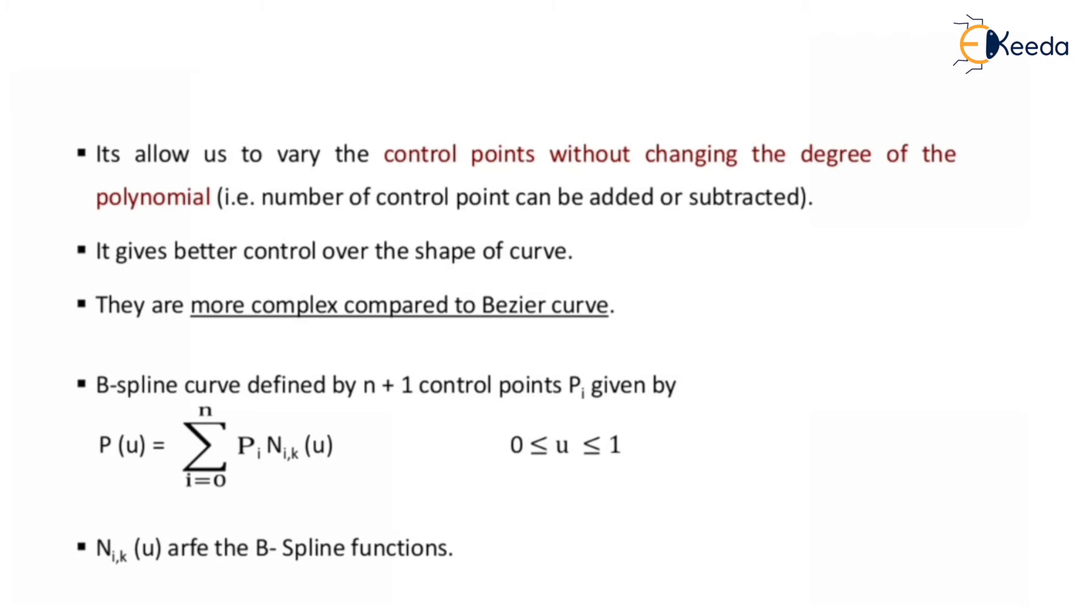It gives better control over the shape of the curve and it is more complex than Bezier curve. So here also there are n+1 control points. Here we can write the equation of a B-spline curve in parametric form: P(u) equals summation of i equals 0 to n, Pi Ni,k(u), where u varies between 0 to 1. Ni,k(u) is the B-spline function.